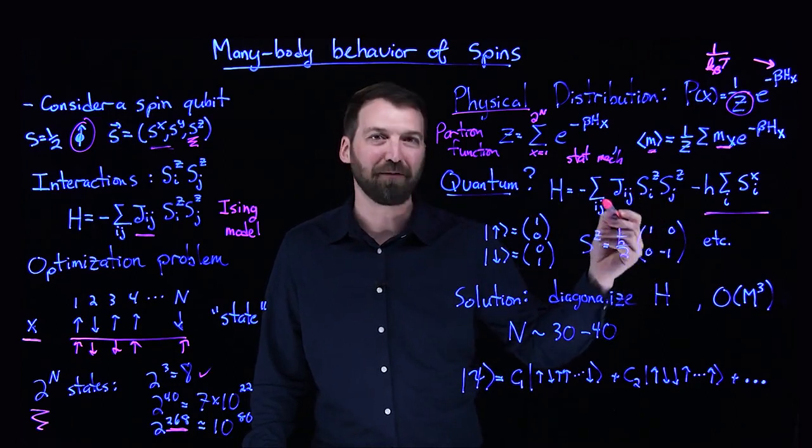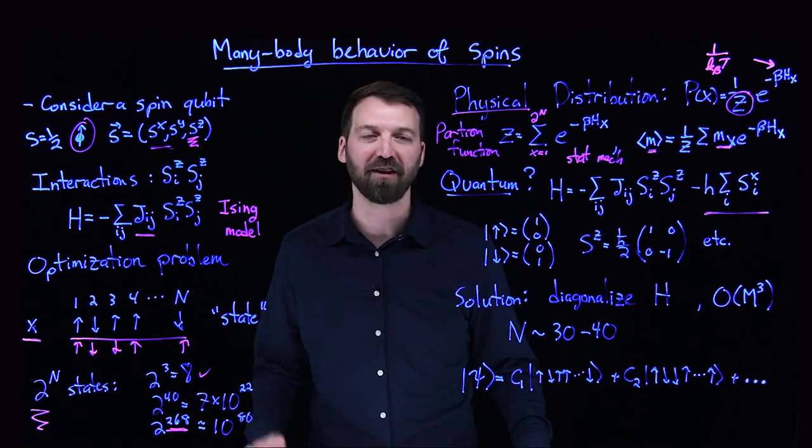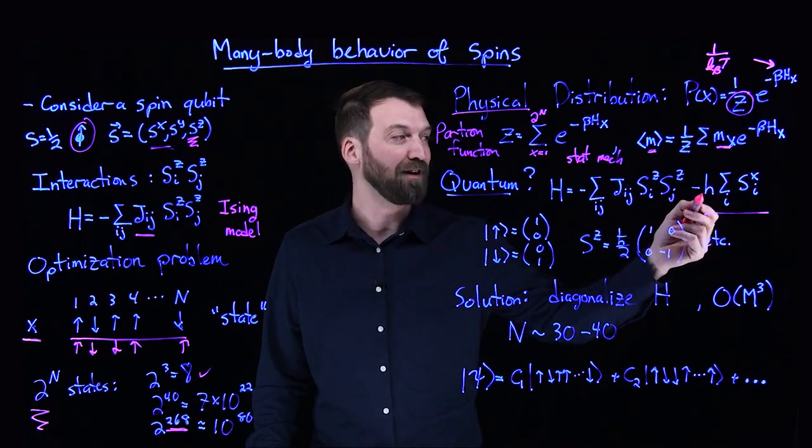This is the actual Hamiltonian of the D-Wave device, in some sense, if I restrict the arbitrariness of these Jij interactions. What D-Wave is doing is applying what we call a transverse field, or an off-diagonal field.